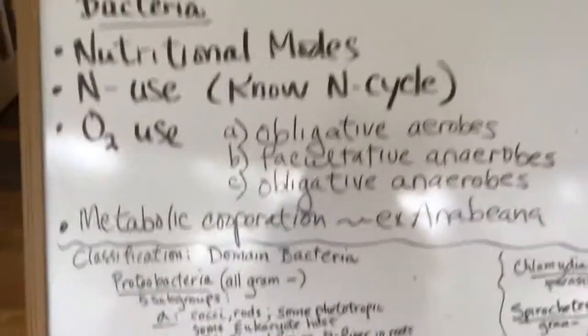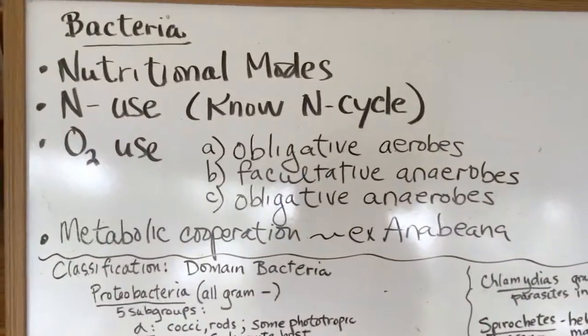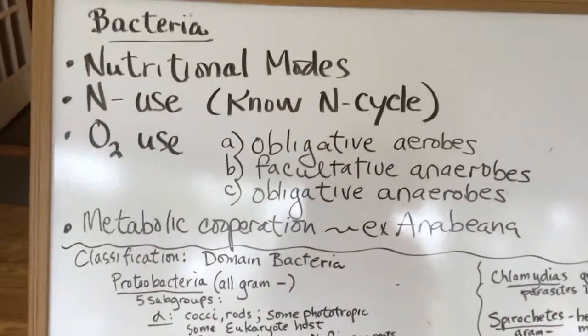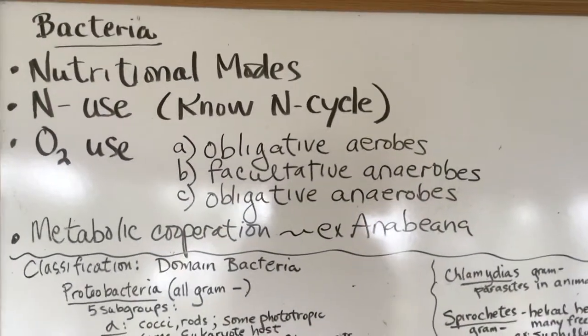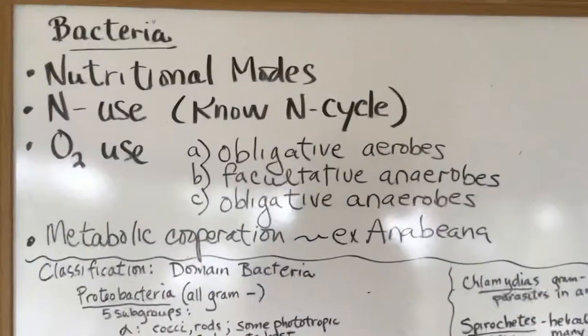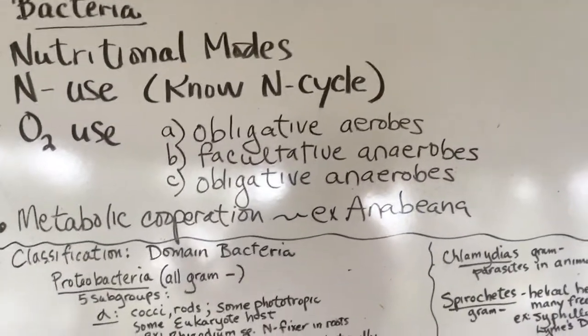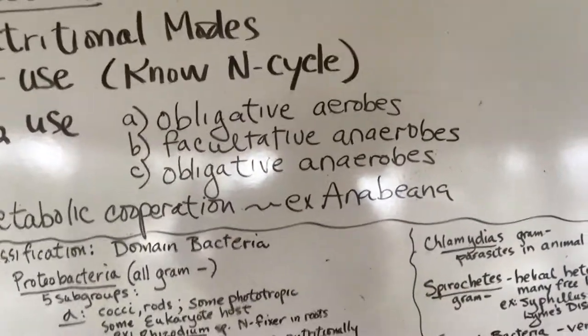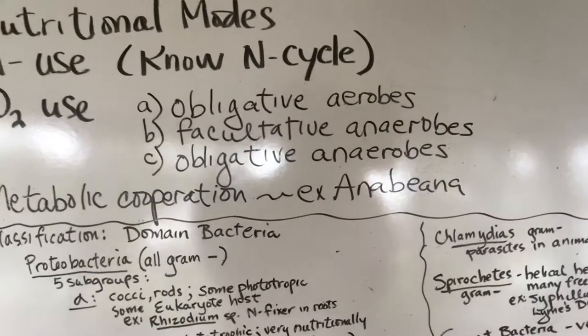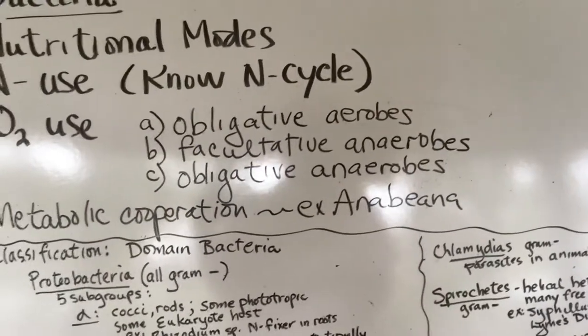The other thing is oxygen use. You might remember going over this in Core 1. You basically have two types - aerobes and anaerobes. Obligative aerobes are ones that always have to have oxygen. Facultative anaerobes can use oxygen but they can also do fermentation, and you might remember doing yeast in Core 1.